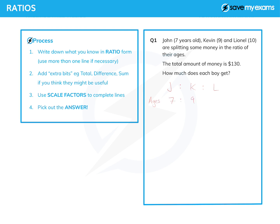The ages are 7, 9, and 10 written in ratio form. We're also given information about the total — the total amount of money — so let's put that in as well. This is step two: deciding what extra bits to put in. We haven't been given the total age, we've been given the total money, so let's create another line for money and the total is 130. The answer we're heading for is how much money each boy gets — those three values.